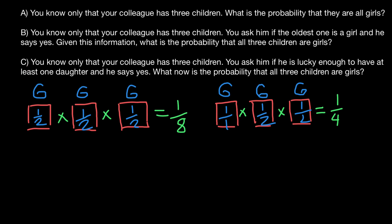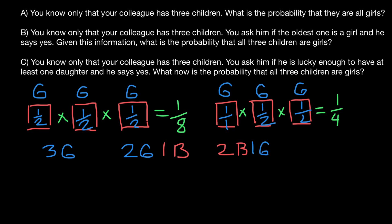And the last question: you know only that your colleague has three children. You ask him if he is lucky enough to have at least one daughter, and he says yes. What is the probability that all three children are girls? Here we use a different approach. Take a look at how a family may have three children. All three can be girls. Another variant: two are girls and one is a boy. Another variant: two boys and one girl. And the last variant: all three children are boys.